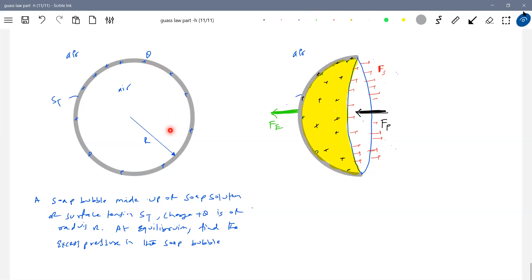I'll write this FE. Because the charge present on the right half will exert force on the left half towards left. Similarly, the charge present on the left half will exert a repulsive force on the right half.